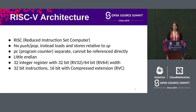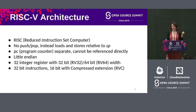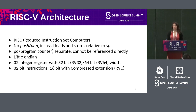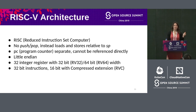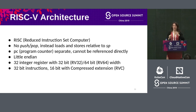RISC-V is a reduced instruction set computer — instructions are small and each does one task. Intel has push and pop operations for the stack; RISC-V doesn't — you need to address your stack relative to memory. The program counter cannot be directly written; instead you must manipulate the return address stored on the stack. Furthermore, it's little-endian, meaning the least significant byte comes first in memory — so when writing an exploit, you need to swap around the bytes.